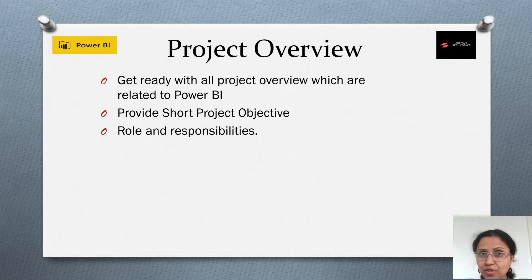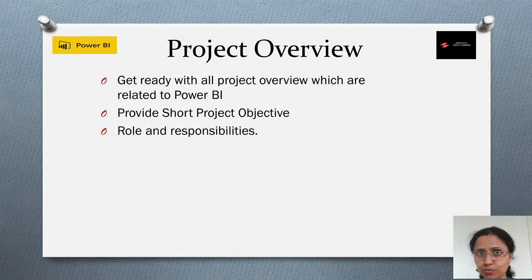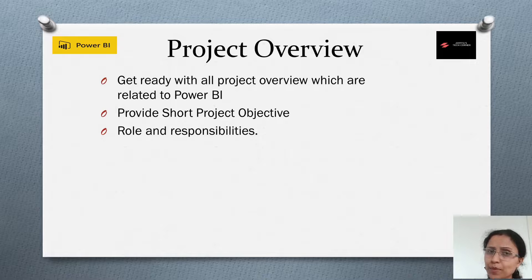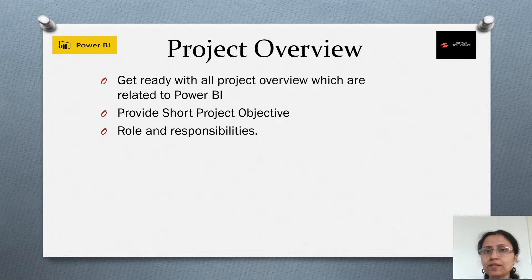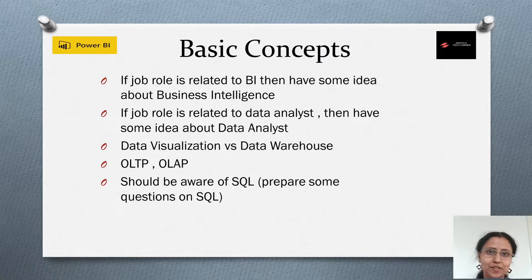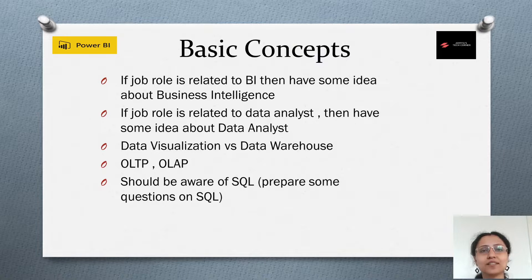When describing a project, keep a proper project description with clear objectives, your role, and your responsibilities. Start from the beginning — don't just say 'I developed all those things.' Start with the requirement phase, then the design phase, then development, then testing, and finally delivery. If you prepared any user manuals or business manuals, mention those too. Go step by step and follow the proper software project life cycle.